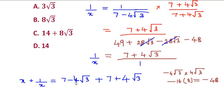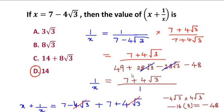Now as we can see, 4 radical 3, 4 radical 3 are same but with opposite signs, so they cancel out each other and we are left with 7 plus 7 which gives us 14. So the value of x plus 1 over x is 14, which is option D.